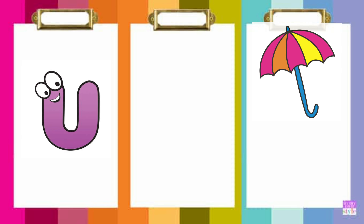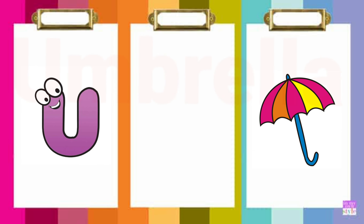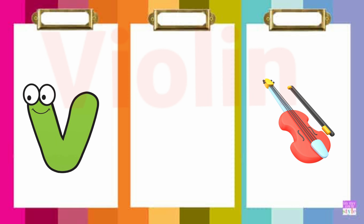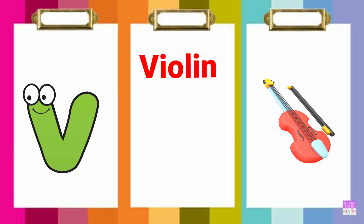U is for Umbrella. U-U-Umbrella. Umbrella. V is for Violin. V-V-Violin. Violin.